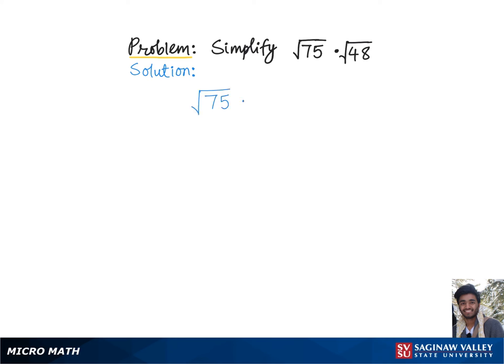To simplify square root of 75 times square root of 48, we'll first combine these radicals using this rule, according to which we'll get square root of 75 times 48.